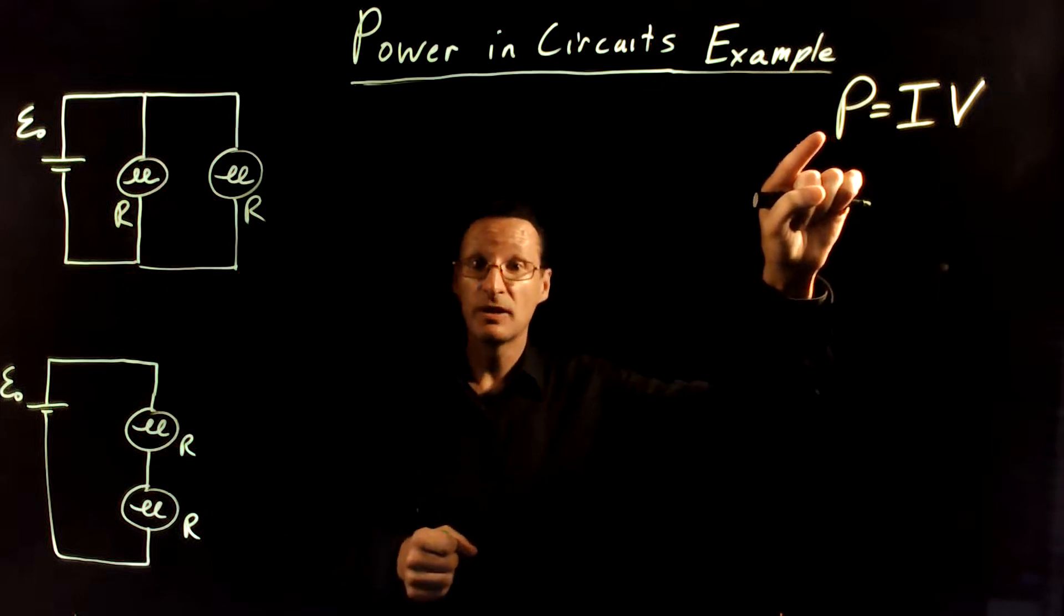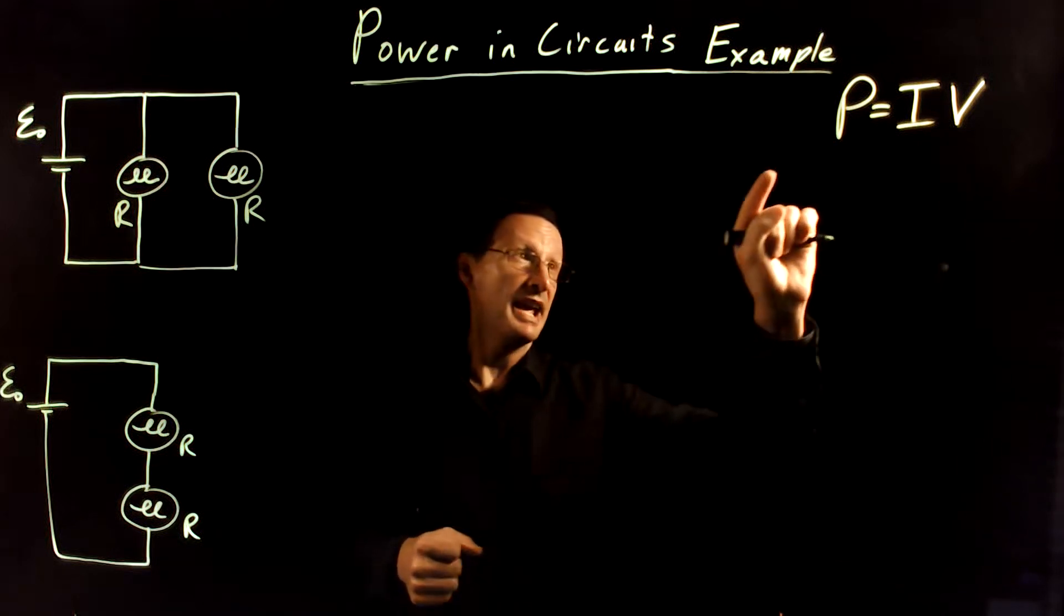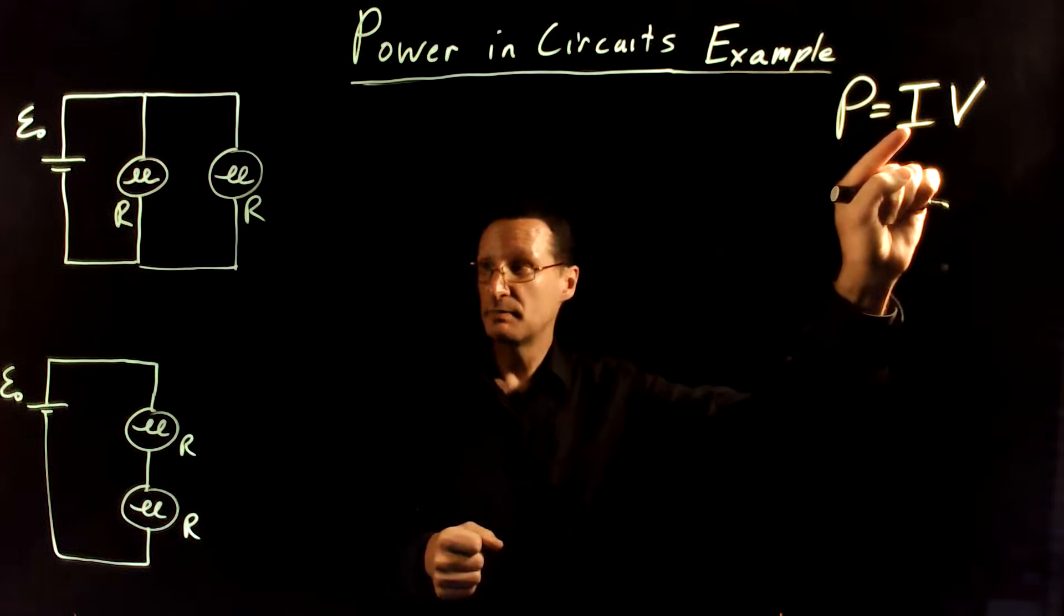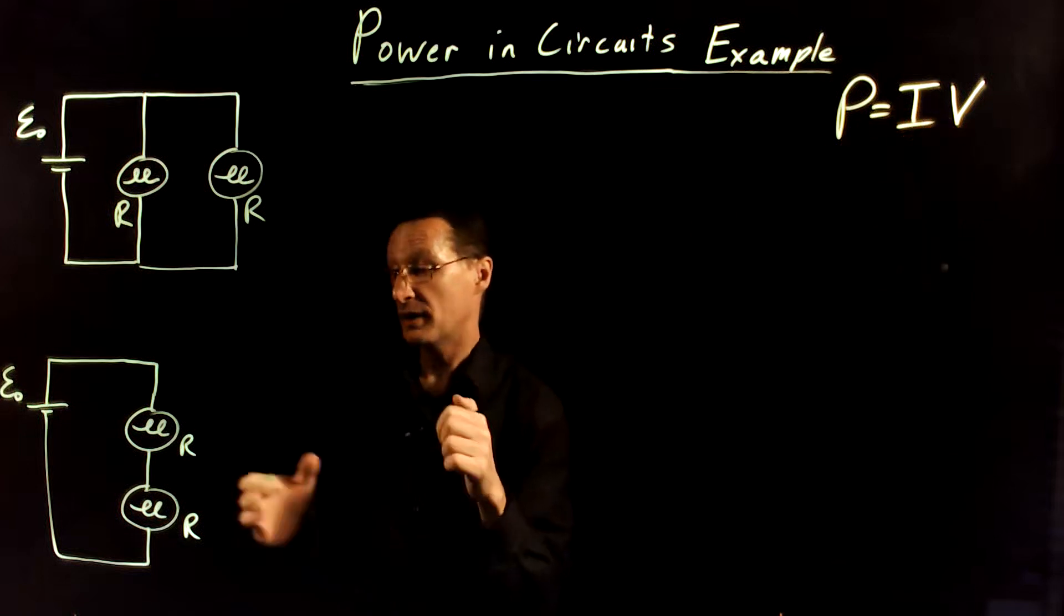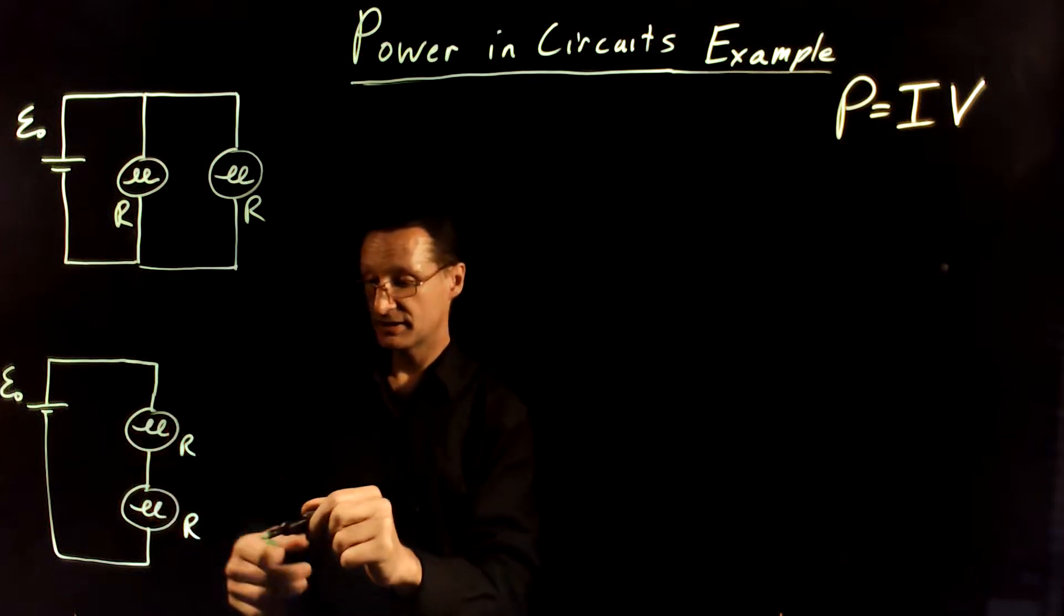And so, to think about brightness, brightness correlates with the power. And so, we need to think about the current through each bulb and the voltage drop across each bulb. So, if we look at this circuit, for example, the series circuit,